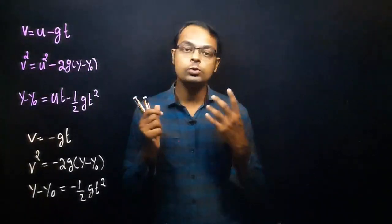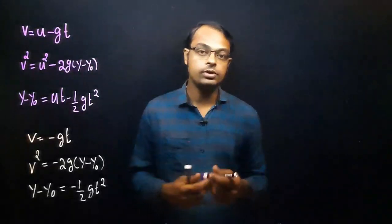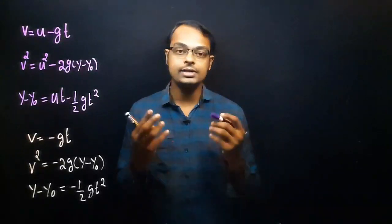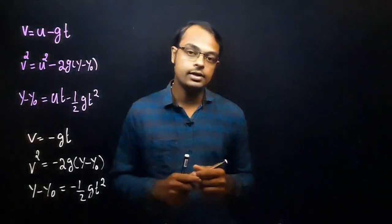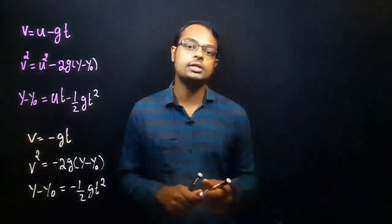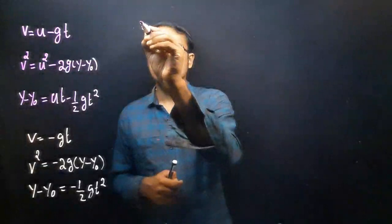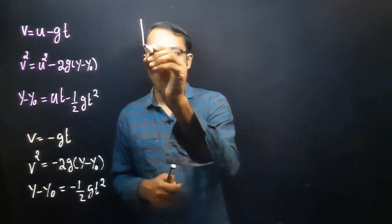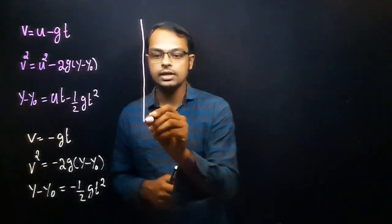Now we have to represent three graphs: the acceleration-time graph, the velocity-time graph, and the position-time graph. Let's start with the acceleration-time graph.